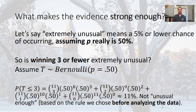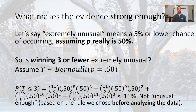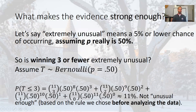If this is our rule — 5% or less chance — is winning three or fewer coin tosses out of 11 extremely unusual? If T is the number of wins following a Binomial(11, 0.5) distribution, the probability that T ≤ 3 works out to about 11%. Recall the notation: 11 choose 3 counts the number of ways to win 3 of the 11 tosses, and you sum across all values from 0 to 3. It turns out there's about an 11% chance of winning three or fewer — that doesn't seem very crazy or unusual.